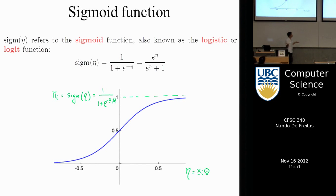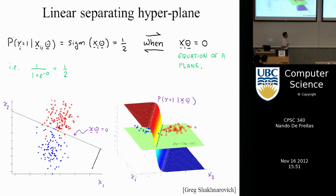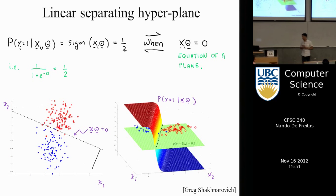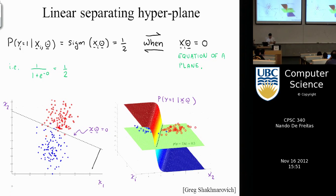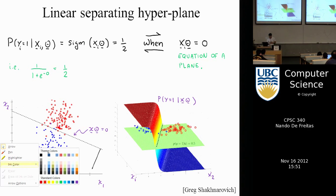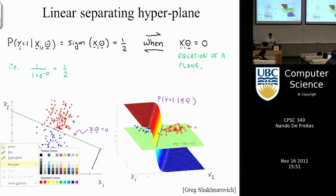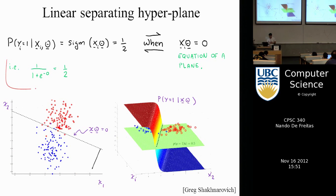The sigmoid function: input is x_i * theta (the linear regression output), which you pass through the sigmoid to get the S-curve. When the input is zero, we get 1 / (1 + e^0) = 1/2.